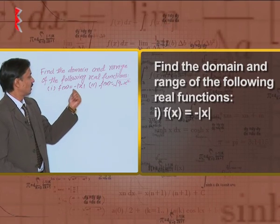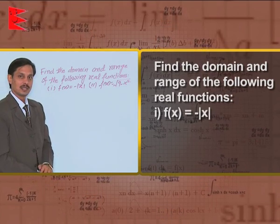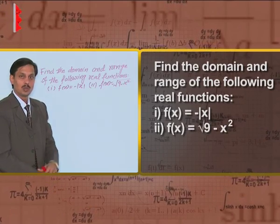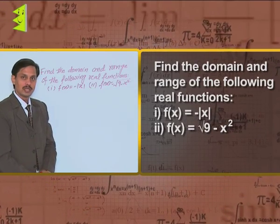The first one is f(x) equals minus mod x, and the second one is f(x) equals root of 9 minus x square.